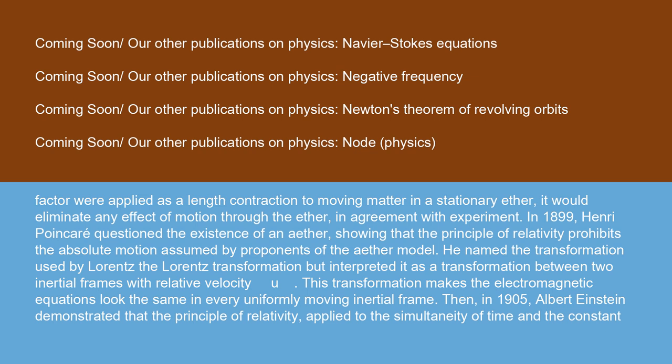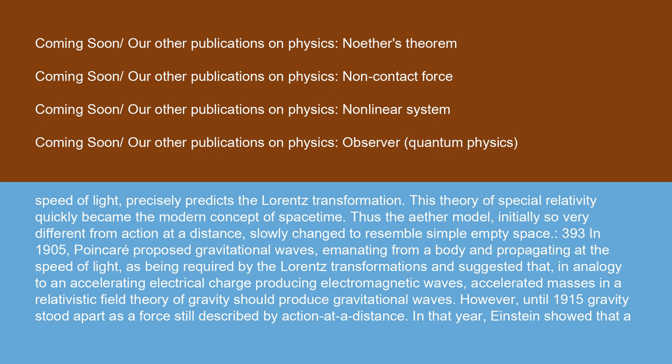In 1899, Henri Poincaré questioned the existence of an ether, showing that the principle of relativity prohibits the absolute motion assumed by proponents of the ether model. He named the transformation used by Lorentz the Lorentz transformation, but interpreted it as a transformation between two inertial frames with relative velocity u. This transformation makes the electromagnetic equations look the same in every uniformly moving inertial frame. Then, in 1905, Albert Einstein demonstrated that the principle of relativity applied to the simultaneity of time and the constant speed of light precisely predicts the Lorentz transformation. This theory of special relativity quickly became the modern concept of space-time. Thus, the ether model, initially so very different from action at a distance, slowly changed to resemble simple empty space.